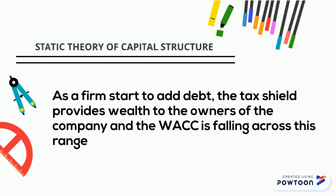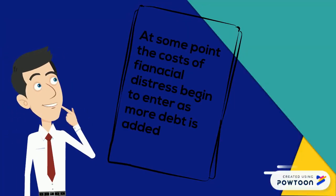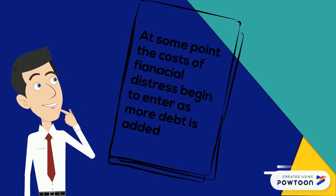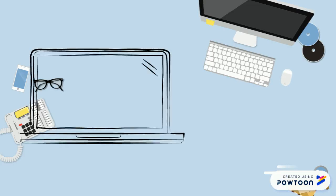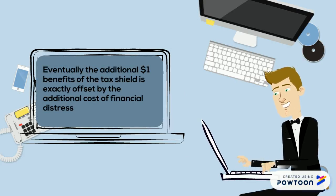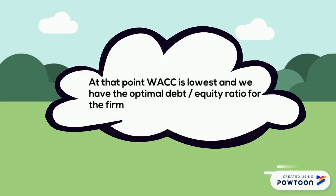As the firm starts to add debt, the tax shield provides wealth to the owner of the company and the WACC is rising across this range. At some point, the cost of financial distress begins to enter as more debt is added. Eventually, the additional $1 benefit of the tax shield is exactly offset by the additional cost of financial distress. At that point, WACC is at its optimal and we have the optimal debt-to-equity ratio for the firm.